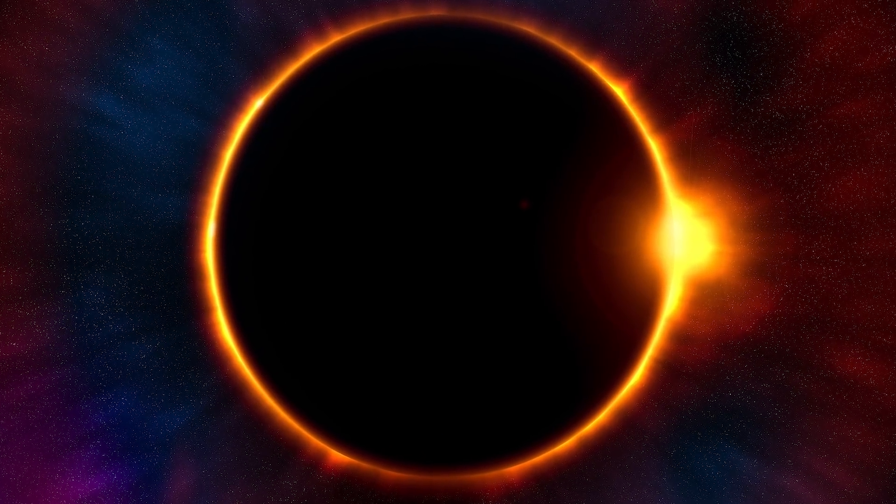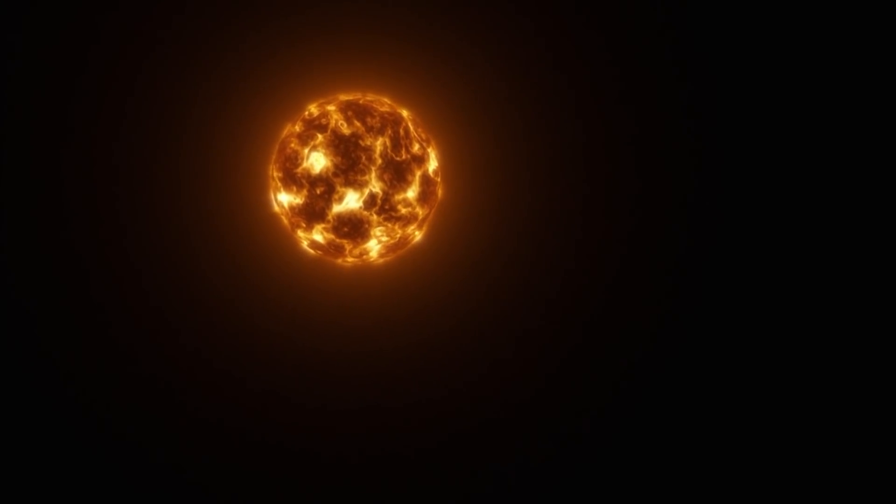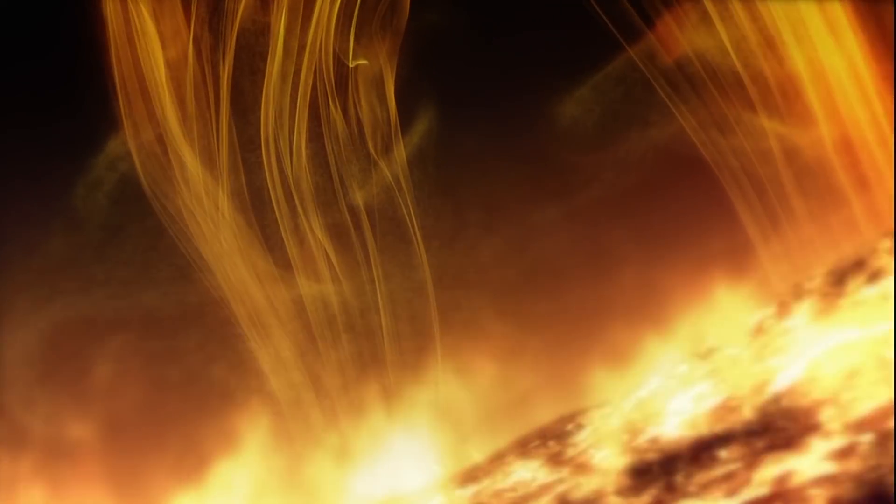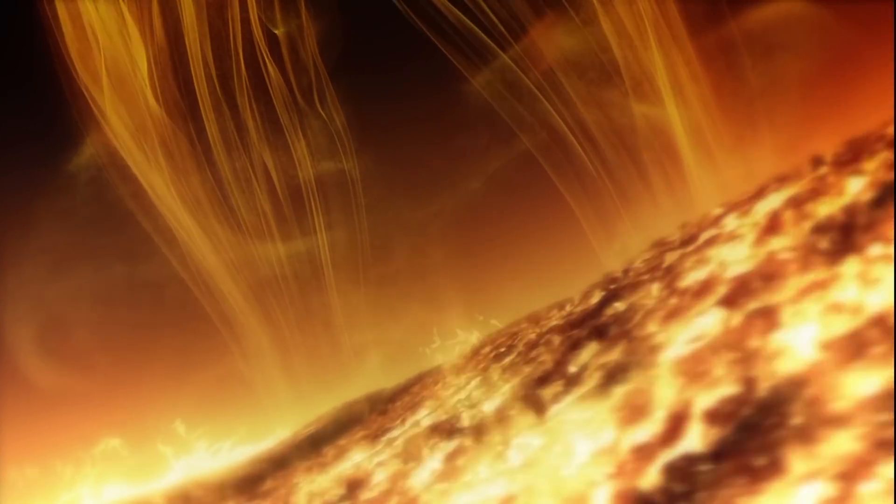It emits a reddish glow as superheated hydrogen burns off, but the red rim can only be seen during a total solar eclipse. At other times, light from the chromosphere is usually too weak to be seen. The chromosphere may play a role in conducting heat from the interior of the Sun to its outermost layer, the corona.